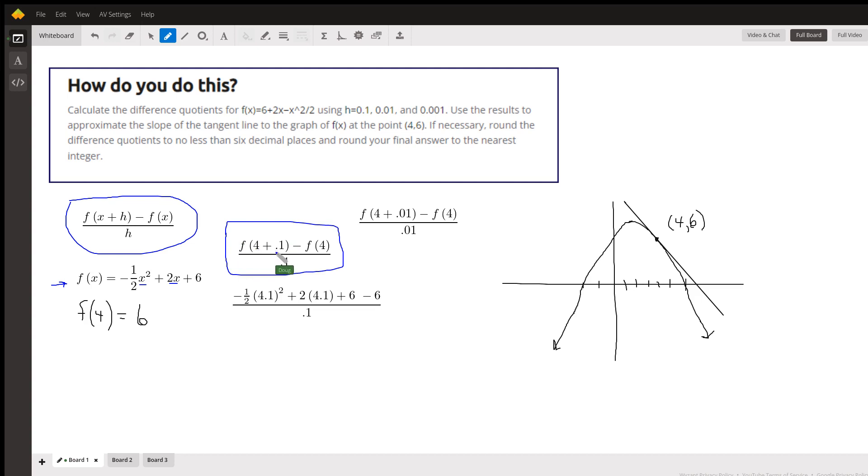So this is the h, 0.1. We're really calculating f(4.1), subtracting f(4), and putting that over 0.1. What that really is, is there's this other point on the curve that's 0.1 units to the right of 4, and we're calculating the rise over the run.